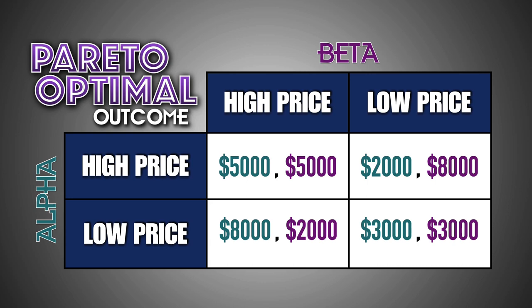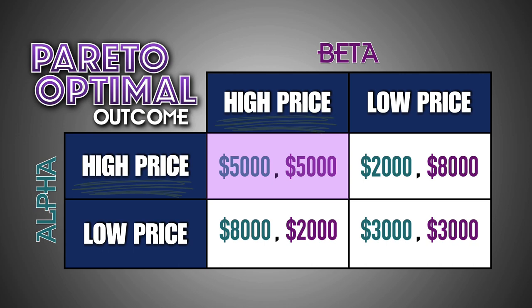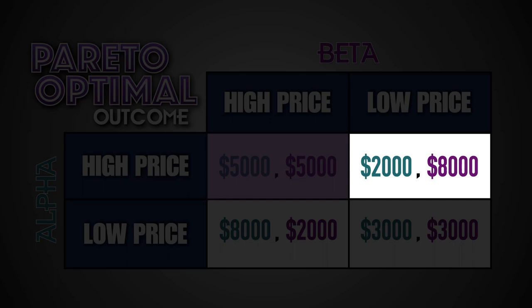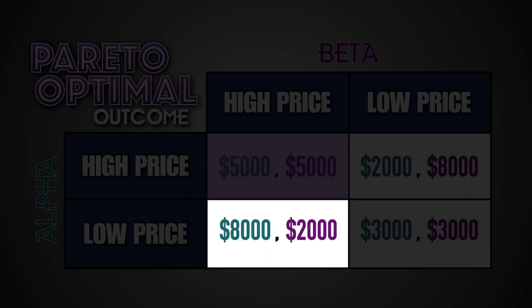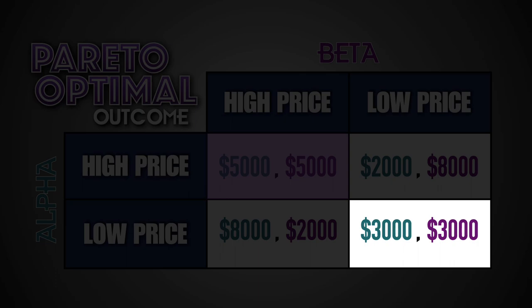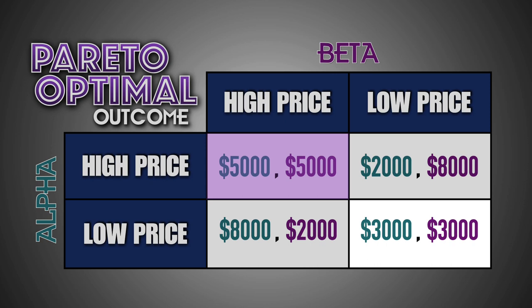What is the Pareto optimal outcome of this scenario? A Pareto optimal outcome occurs when there is no other outcome that makes every player just as well off, or at least one player strictly better off, and the outcome cannot be improved upon without hurting at least one player. In reality, it doesn't always necessarily occur when both players follow their dominant strategies. In this scenario, the Pareto optimal outcome would be for both firms to set their prices high. By following the high price strategy, both firms would earn $5,000 in economic profit. If one firm committed to setting their price high and the other firm deviated to a low price strategy, the firm that reduced their price would benefit at the expense of the firm that kept their price high. In essence, one firm would gain profits while the other would be worse off. In addition, if both firms committed to a low price strategy, they'd both earn less profits than if they had decided to both set their prices high.